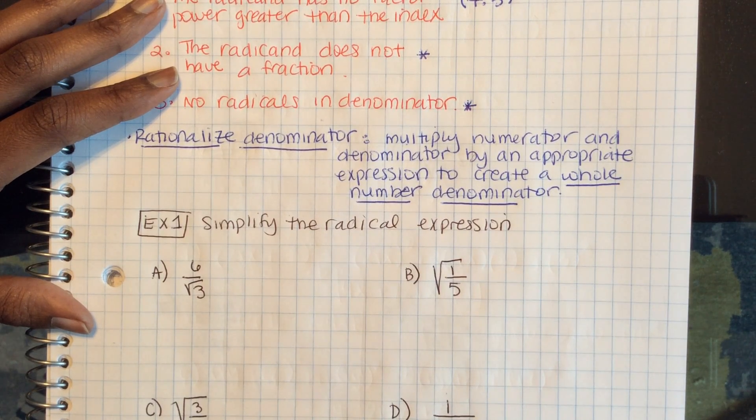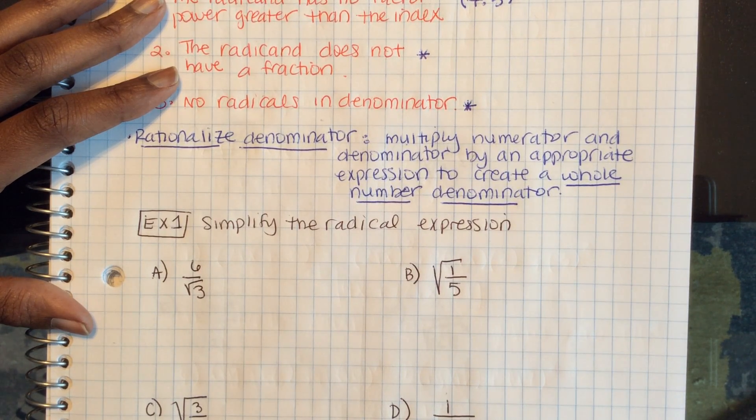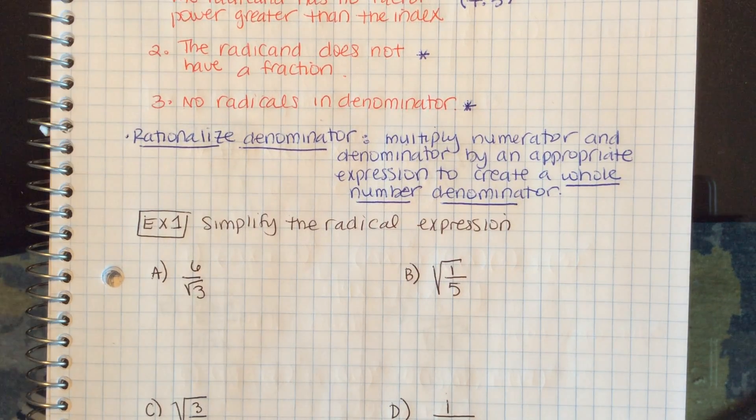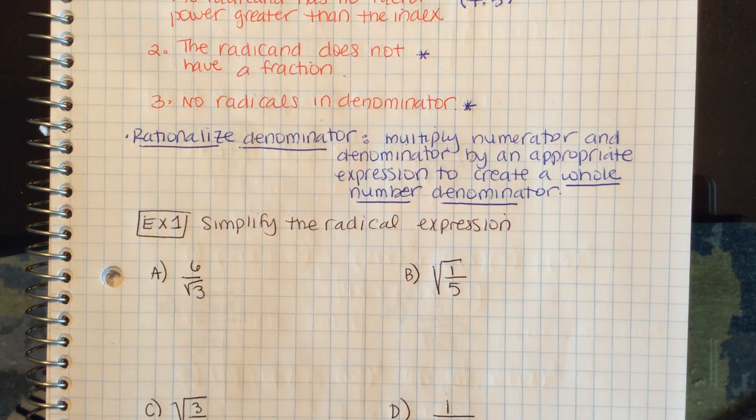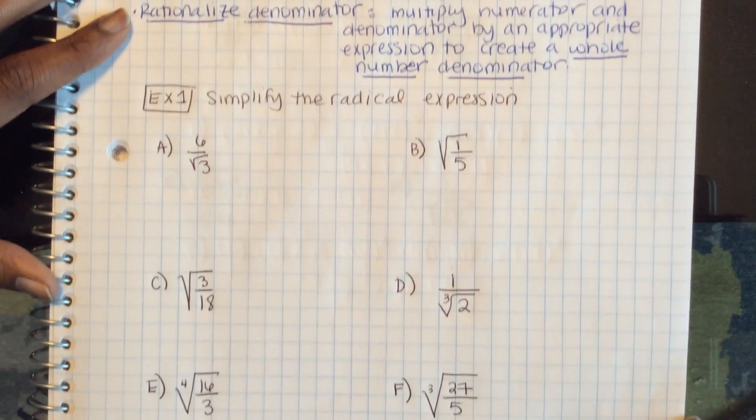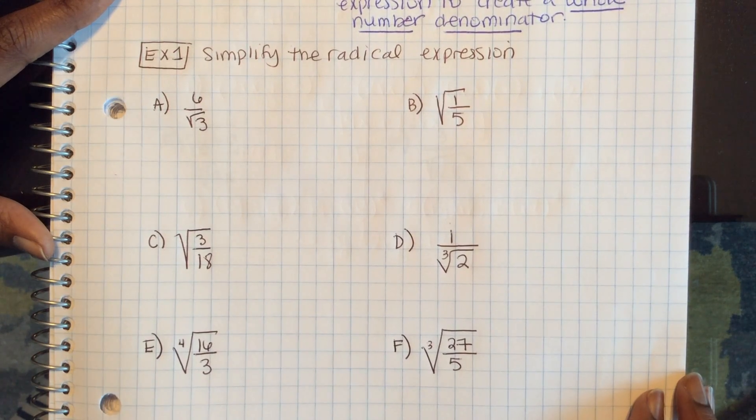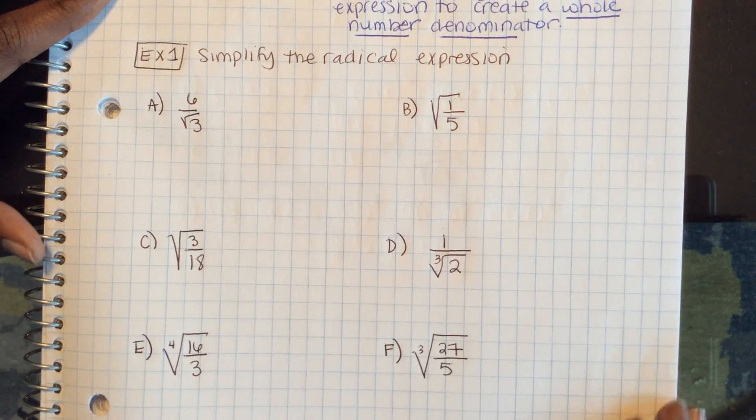That's the whole purpose of rationalizing a denominator, because a fraction has to be part of a whole number. So, some of these types of problems you've seen in the past, with square roots and rationalizing those denominators, but now, there won't only be square roots. So, in Example 1, we want to simplify the radical expression.